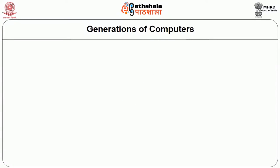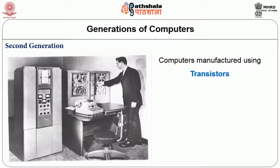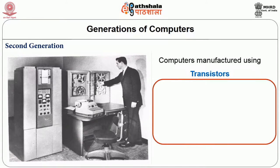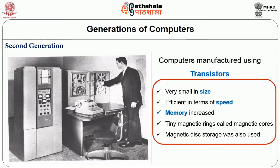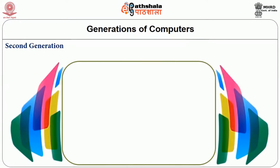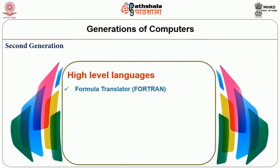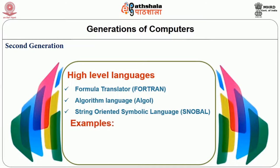Second generation computers were manufactured using transistors, became very small in size, and efficient in terms of speed, with memory increased several thousand times. Tiny magnetic rings called magnetic cores were used as memory components. Magnetic disk storage was also used. High level languages such as Fortran (Formula Translator), Algol (Algorithm Language), and SNOBOL (String Oriented Symbolic Language) were in use during that time. IBM 1401 and TDC12 are some examples of second generation computers.